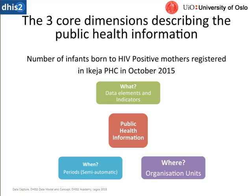Organization units are very flexible — you can create them however you want in DHIS2 and group them in many different ways. That relates to where the information is being gathered. Multiple organization units can enter the same data elements, which is our 'what.' For example, a data element might be the number of infants born to HIV positive mothers registered at a specific PHC — the PHC is the 'where,' and the number of infants born is the 'what.' The 'when' answers over what time period — are we entering data daily, weekly, or monthly? This is decided when we create the data element.